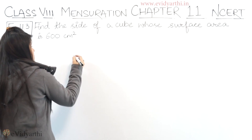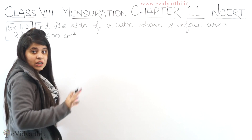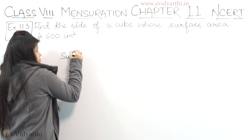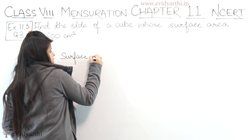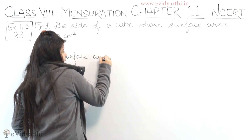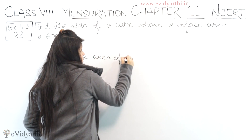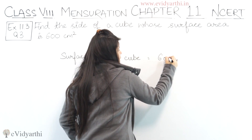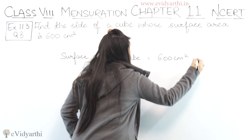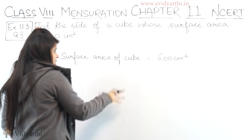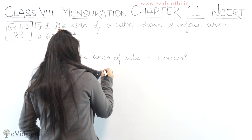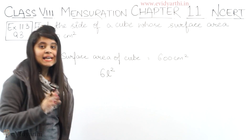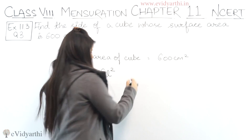So first we need the formula for the cube's surface area. The surface area of a cube is 6L square, where L is the side, or we can say length.